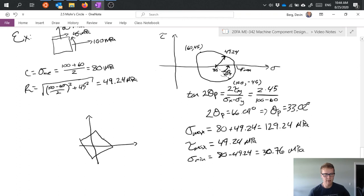Rotating my stress element such that this new axis this would be x prime from what we talked about before is rotated by 33.02 degrees my normal stress on this is 129.24 my shear stress is zero.